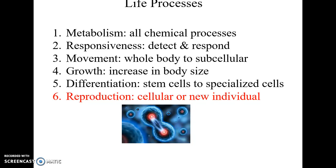Growth is an increase in body size. This can occur from division of cells, from increased material outside of cells, or from the cells themselves getting bigger. Differentiation is how we go from being a single fertilized zygote to all the various specialized cells found in our body — neuron cells, muscle cells, skin cells, and so on.